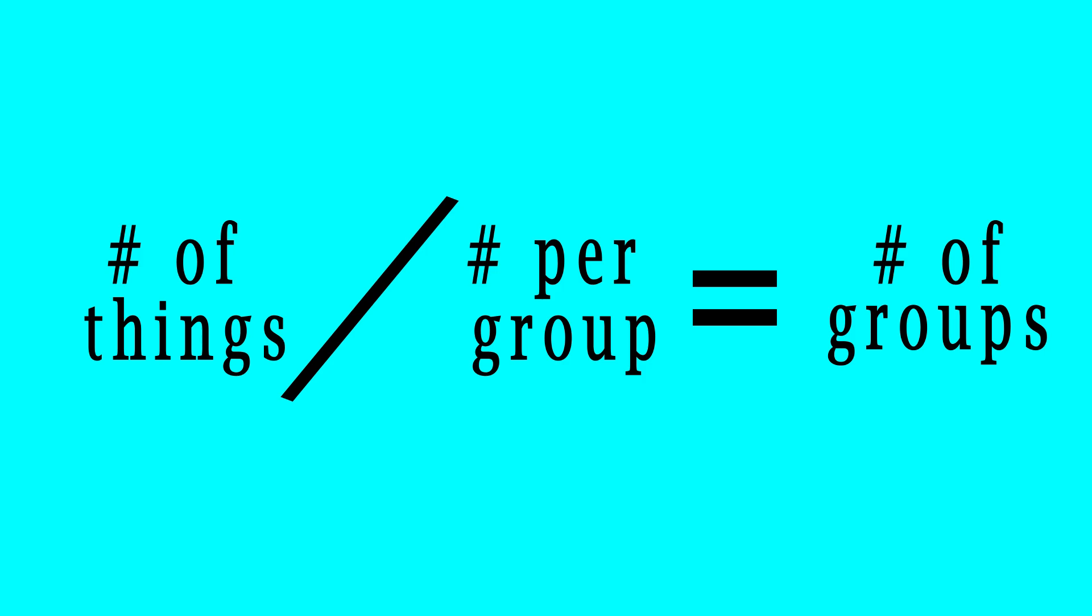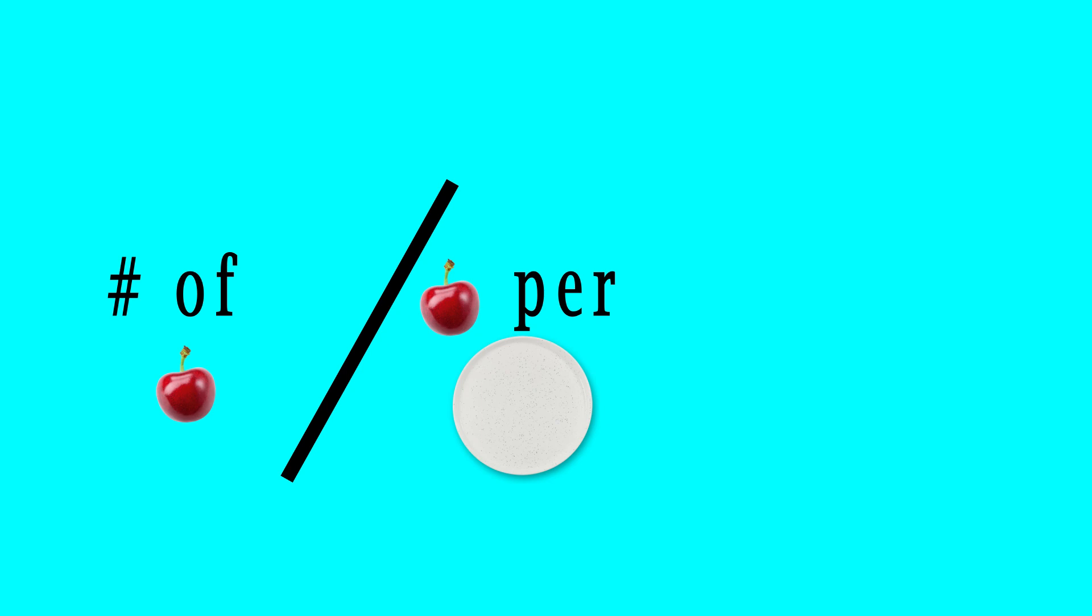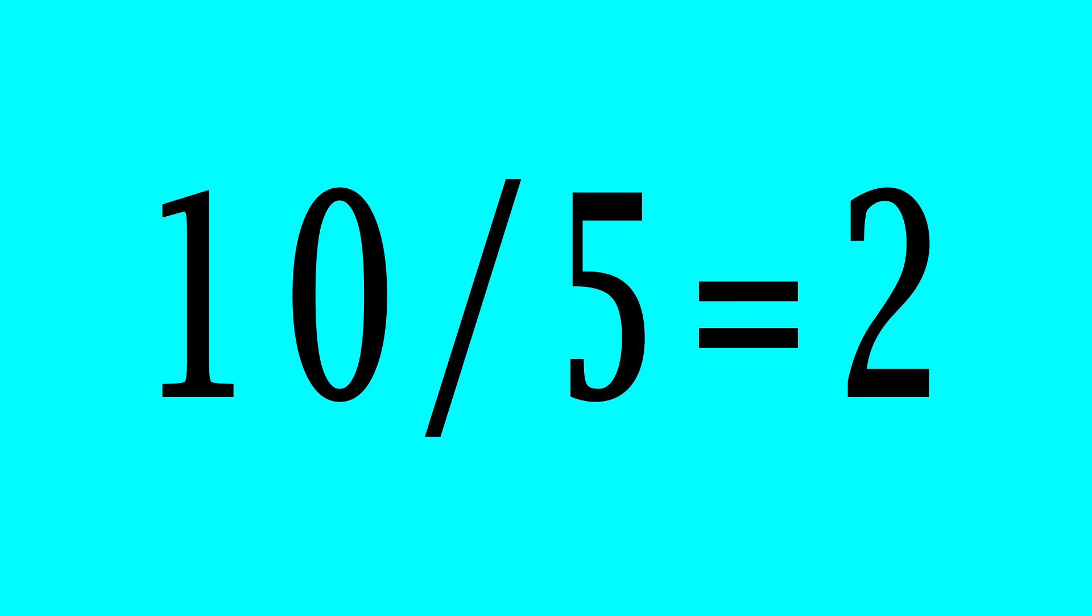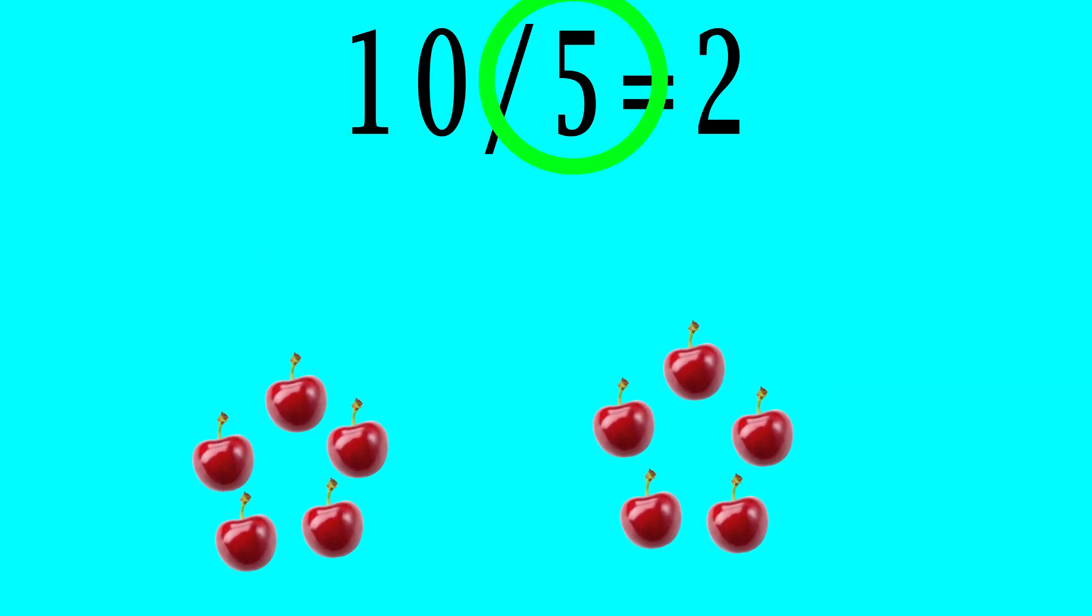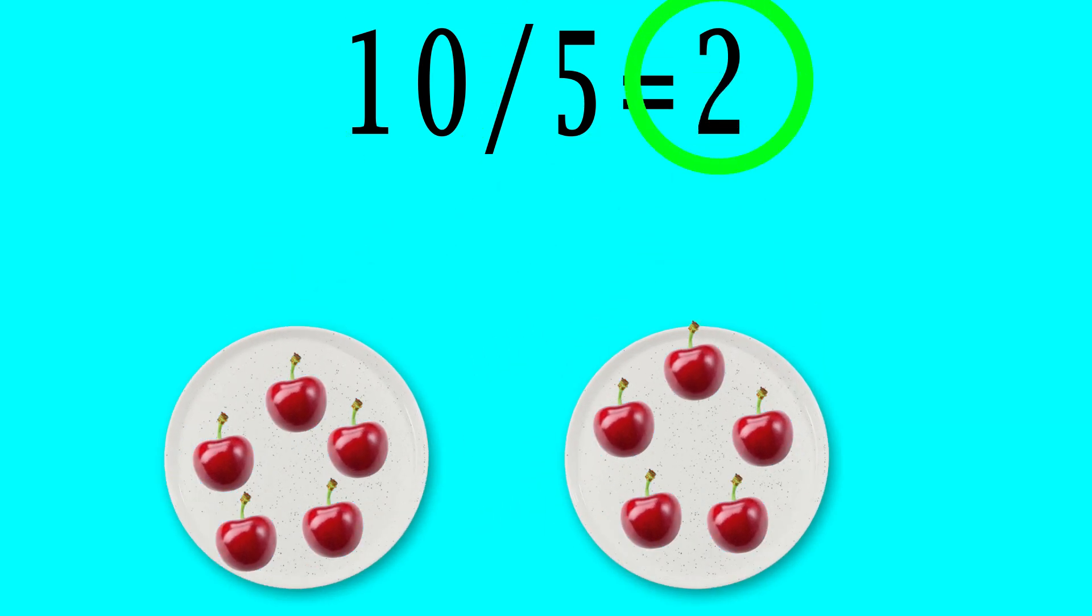To make things a little more concrete, let's have our groups be plates and our things be cherries. The total cherries we have divided by the number of cherries on each plate equals the number of plates. Now the equation 10 divided by 5 equals 2 is saying that if we have 10 cherries and we put 5 of them on each plate, then we must have 2 plates. Simple enough.